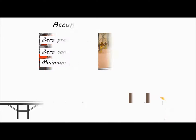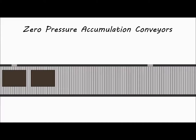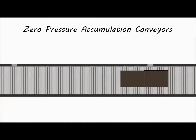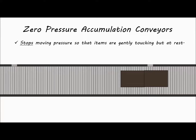Zero pressure accumulation conveyors allow for light contact between products when the system signals that queue to accumulate. Once these products come into contact, the system stops the moving pressure so that products are gently touching but at rest. This is accomplished by photoelectric sensors and onboard zone logic that control this movement.